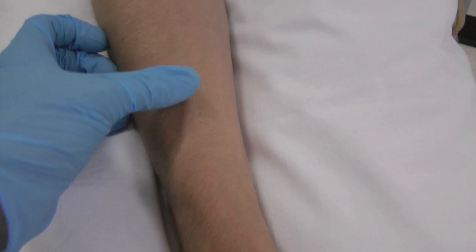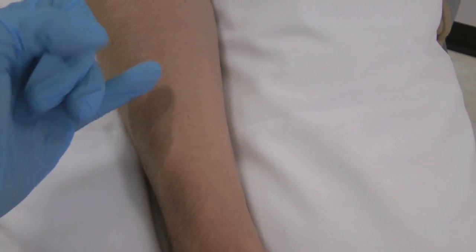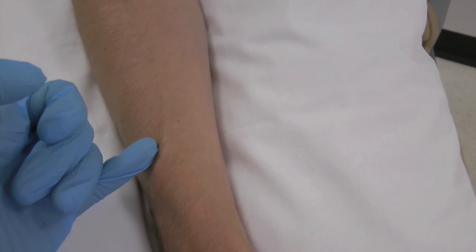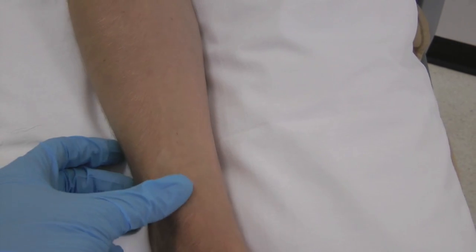The cephalic vein on the radial side of the forearm is another good option for gaining intravenous access. To enlarge the vein, place a tourniquet below the elbow.